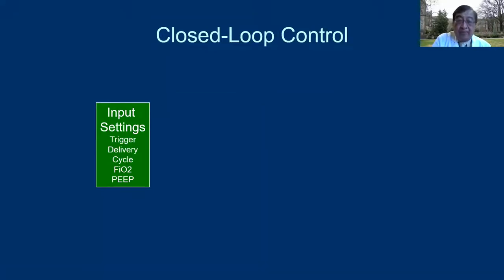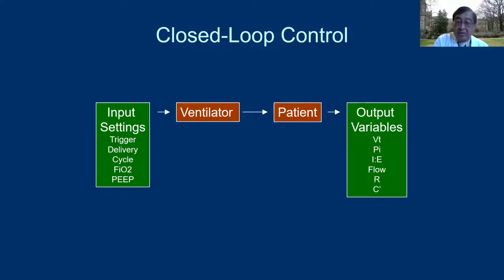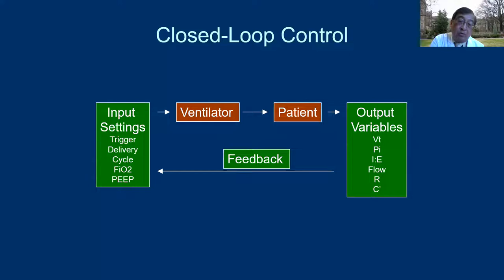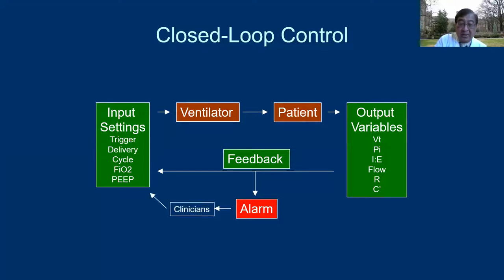Then there is closed-loop control. You still input settings, but for advanced closed-loop modes, it's not really tidal volume or rate — you input minute ventilation. Some of the output variables feed back to the ventilator, creating a feedback loop. This loop continues to run until at some point it cannot — for example, the tidal volume just cannot be decreased anymore. When the closed-loop control alarms, usually something bad has happened, so this alarm should not just be silenced.